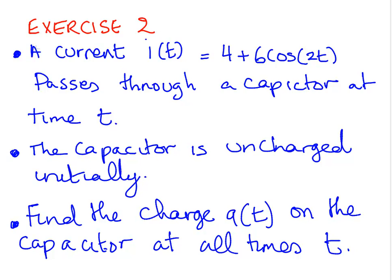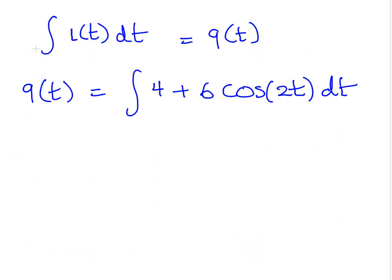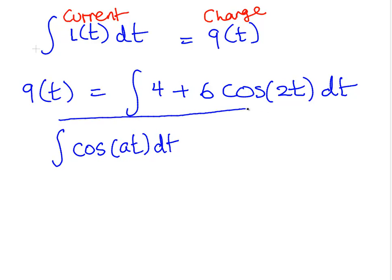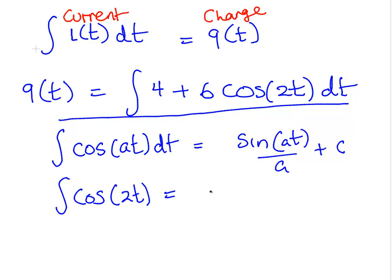This is a very similar question actually. We are doing the exact same job. We are integrating the current, i of t, dt. We are integrating that to find the charge. Just to be clear about this again, i is current, q is charge. q equals the integral of this, 4 plus 6 cos 2t dt. Let's just take a moment here to talk about cos of at dt. This is just a general term. And again, this is sin at over a. Essentially, we are dividing by a when we are doing these expressions in terms of sin, cos or something like that. So, cos of 2t dt is equal to sin 2t over 2.